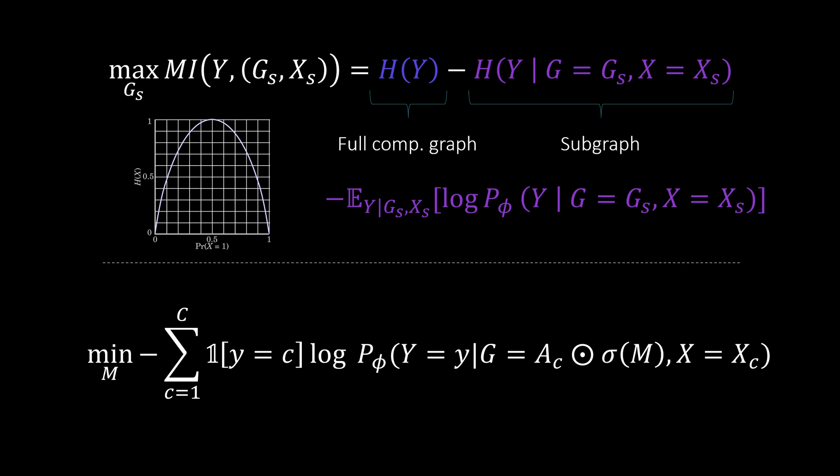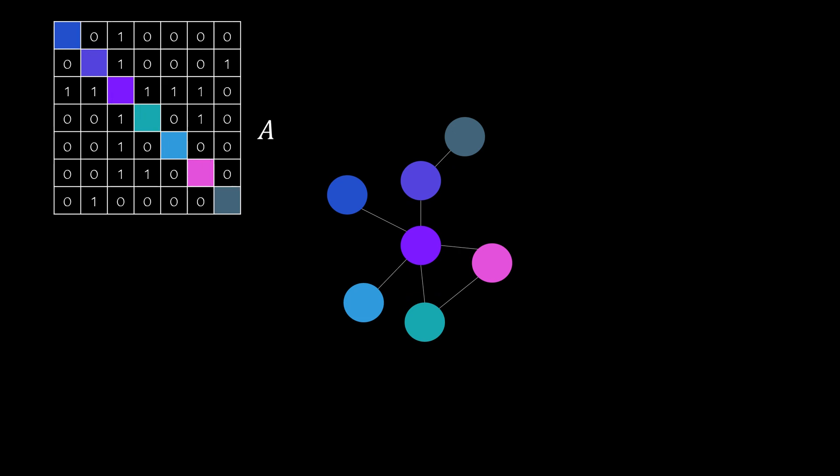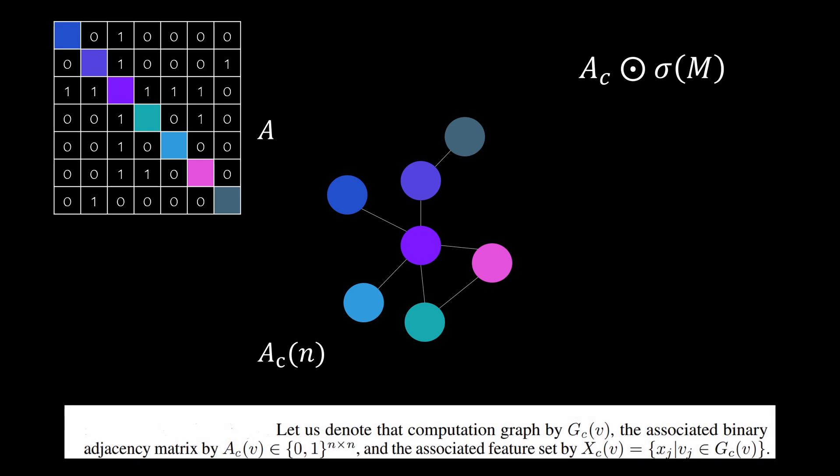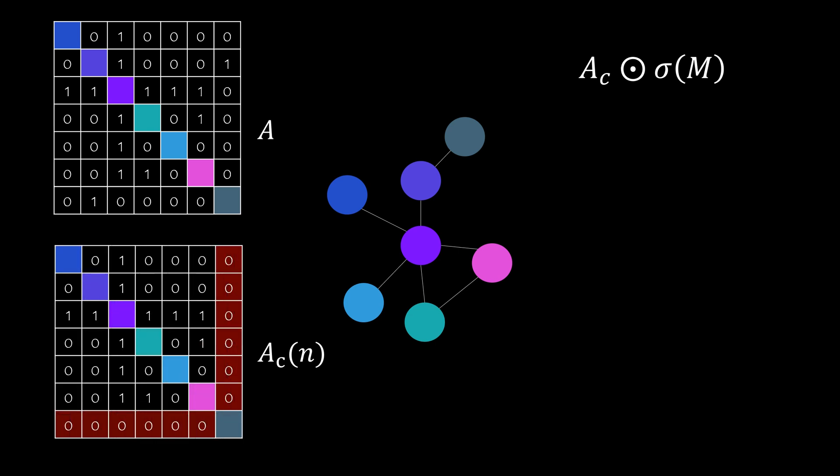We will come back to this formula in a second but first I want to give you a better understanding about this masking part. So this is the graph of the previous example and this is how the adjacency matrix of this graph looks like. I've put the node colors on the diagonal. This is the masking part of the previous formula. AC is the adjacency matrix of the computation graph for a specific node. It can also be denoted like this. In the paper there's not much more detail about it, but the only logical explanation for me is that it is the adjacency matrix defined on the local neighborhood of the node we are interested in. So for our two-layer GNN and a classification of the green nodes, the gray node for example would not be considered because it's not part of the computation graph. Therefore all connections are zero.